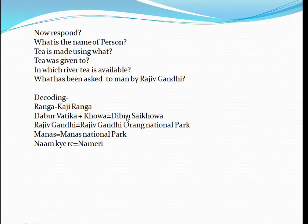Dibru was coded like that of Dabar, and Saikhowa was coded like that of kova. Generally in the examination, they will ask straight away: where is Dibru Saikhowa National Park located? Then you can use: Dibru was converted into Dabar, kova was converted into Saikhowa, and tea is made by using these two. So tea coding is Assam.